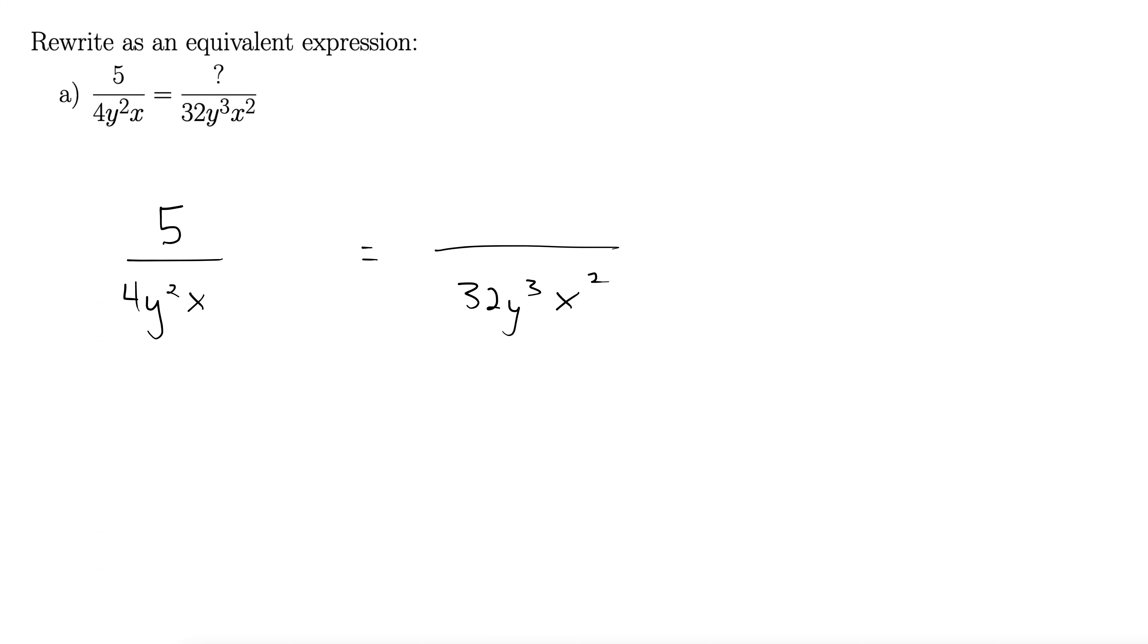So we kind of ask ourselves here, what do we need to add to this denominator to make it match up with this denominator over here? We have a 4, we need it to be 32, so we'll multiply it by 8 because 8 times 4 is 32.